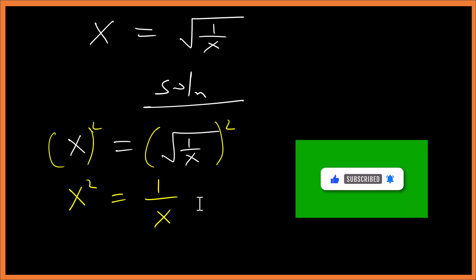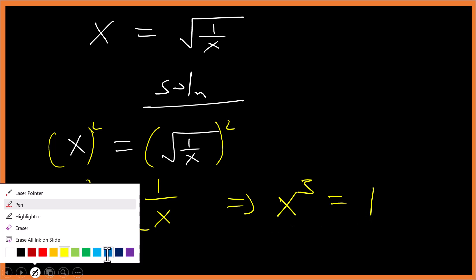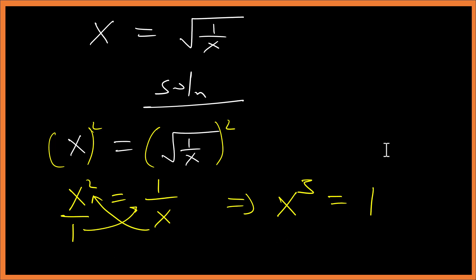From here we can make this side over 1 and do cross multiplication. That will be x³ equals to 1. Now before we can solve this, we have to understand the sum and difference of cubes.